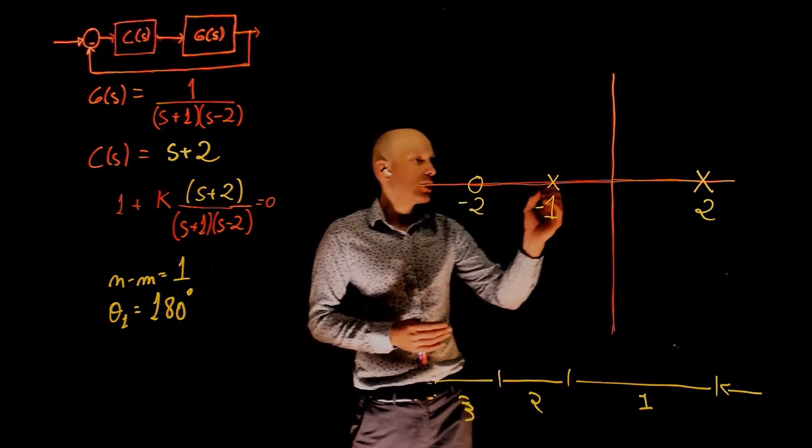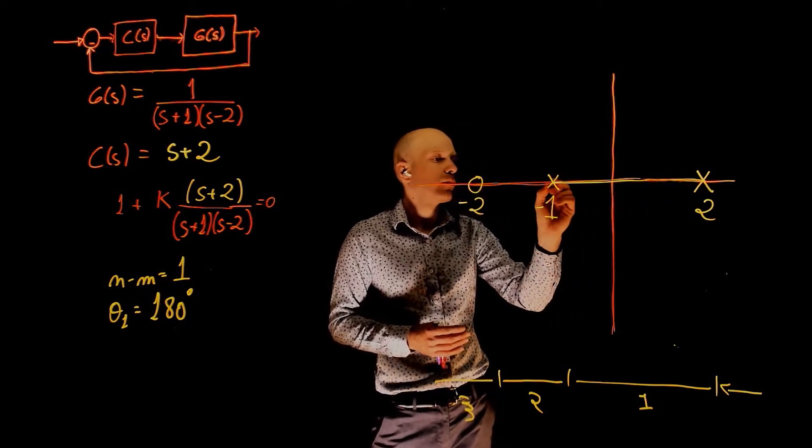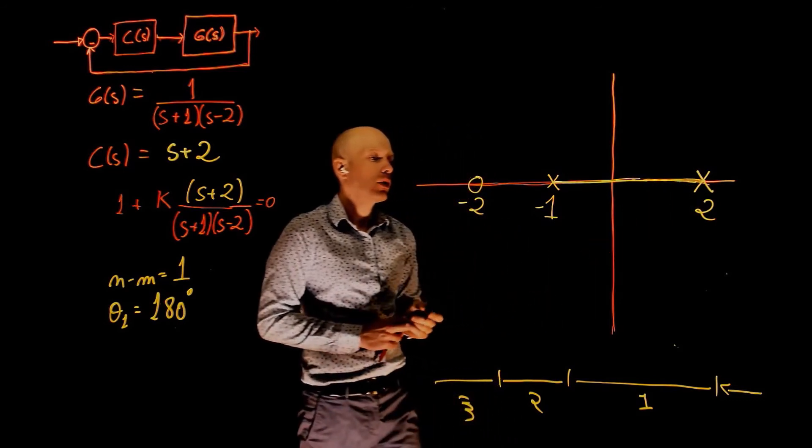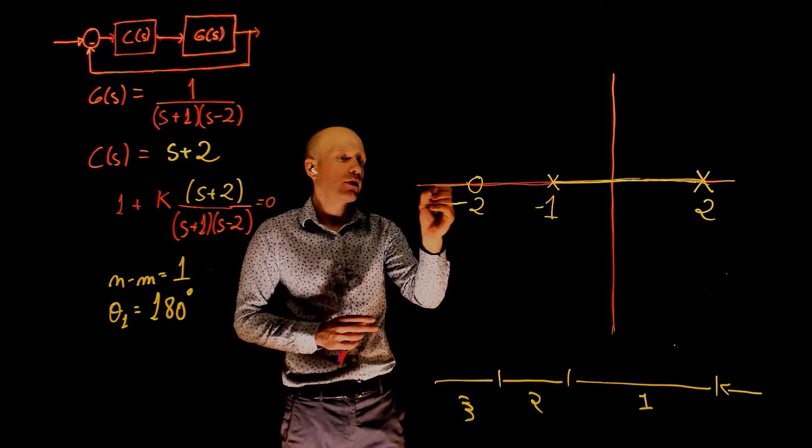So the root locus exists between these two poles. We can draw the initial root locus here and exists to the right and exists to the left of negative 2.